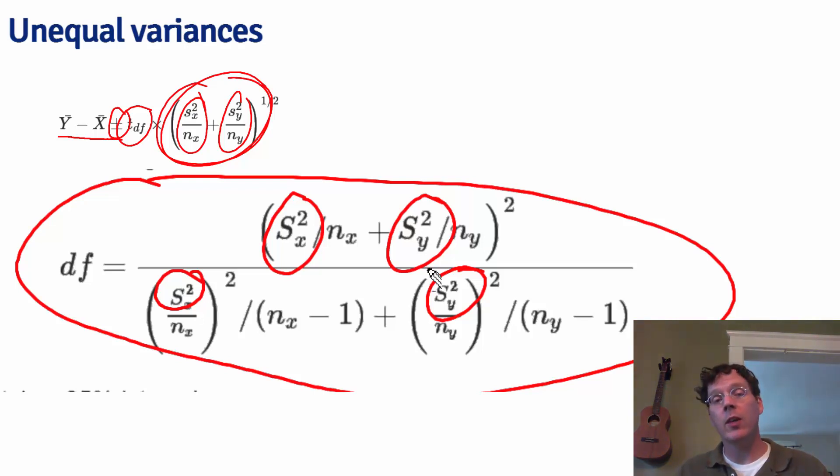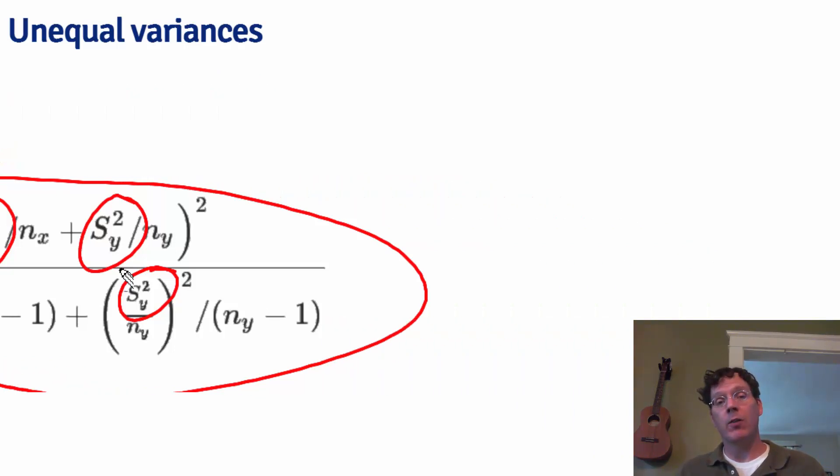you get a t-calculation that very closely approximates the relevant distribution, which is not actually a t-distribution. And it turns out that it works well enough that I can give the statement that when you're in doubt, just use the unequal variance interval.